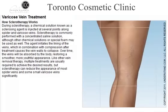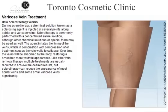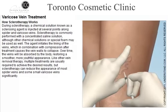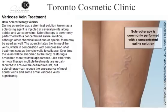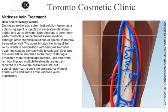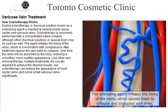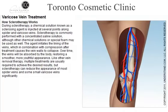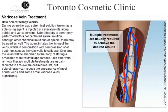During sclerotherapy, a chemical solution known as a sclerosing agent is injected at several points along spider and varicose veins. Sclerotherapy is commonly performed with a concentrated saline solution, although other chemical solutions or special foam may be used as well. The agent irritates the lining of the veins, which in combination with compression after treatment, causes the vein walls to collapse. Over time, the veins will be absorbed by the body, restoring a smoother, more youthful appearance. Multiple treatments are usually required to achieve the desired results, but sclerotherapy can reduce the appearance of most spider veins and some small varicose veins significantly.